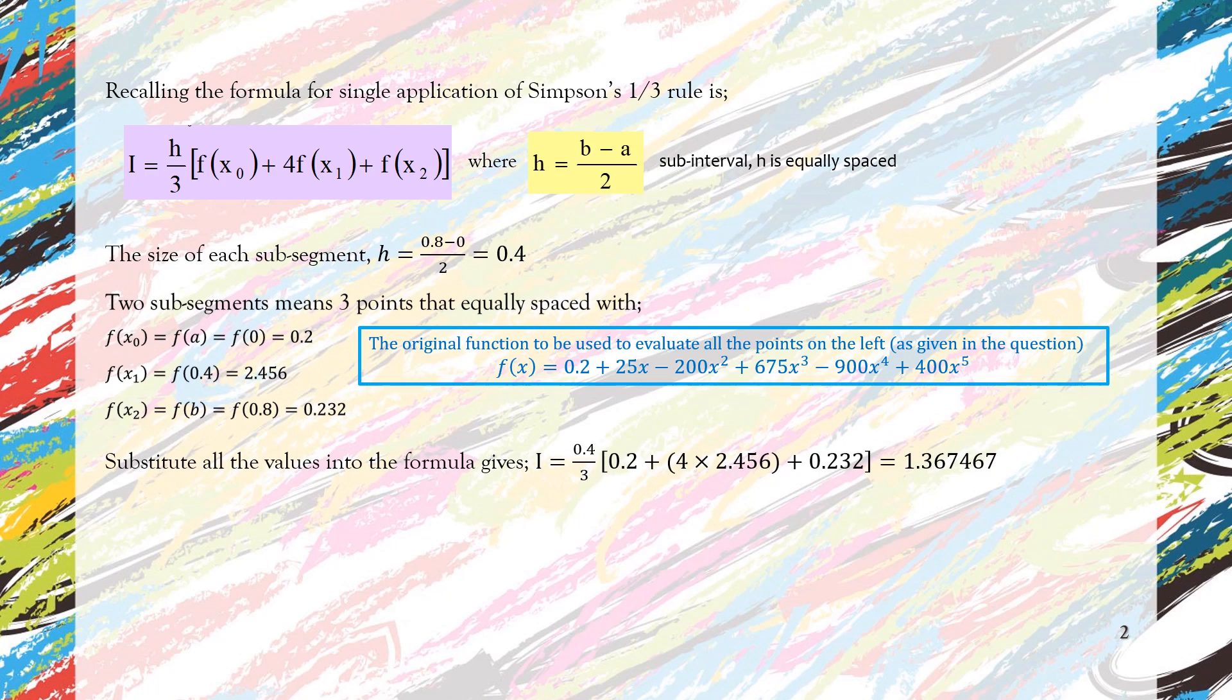Then we substitute all the values we have calculated into the formula for single application of Simpson's one-third rule. We get the integral approximation using this method equal to 1.367467.